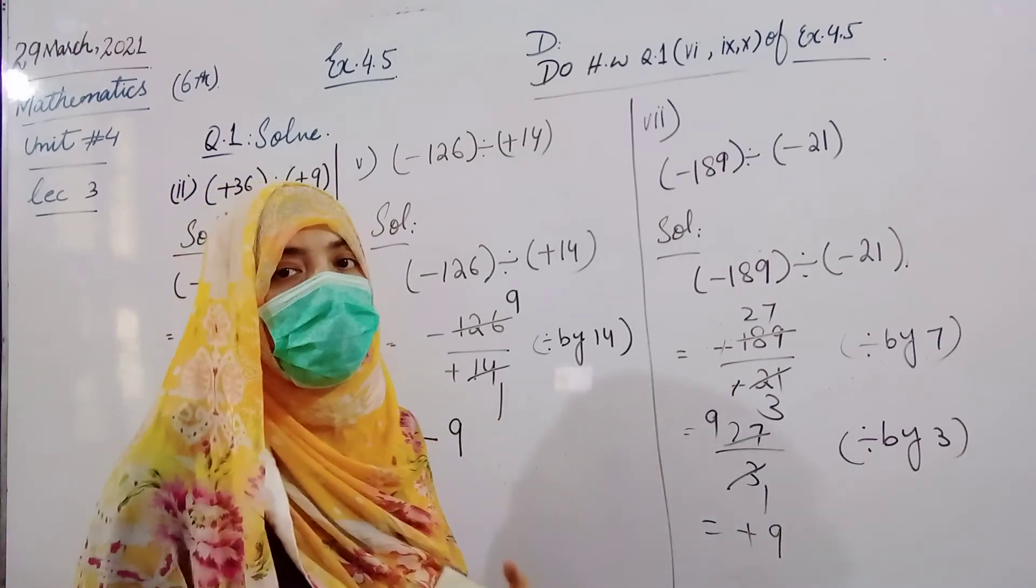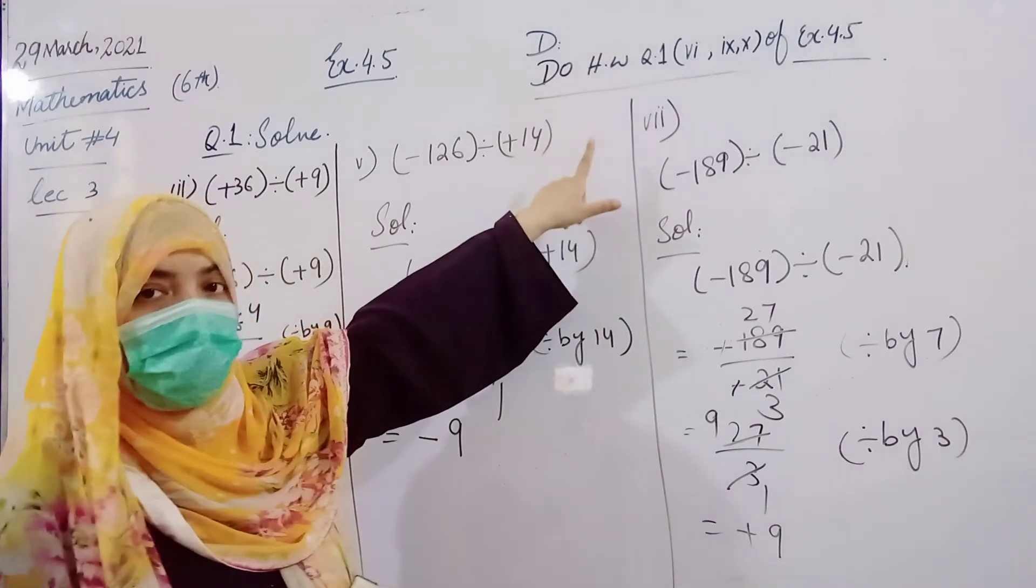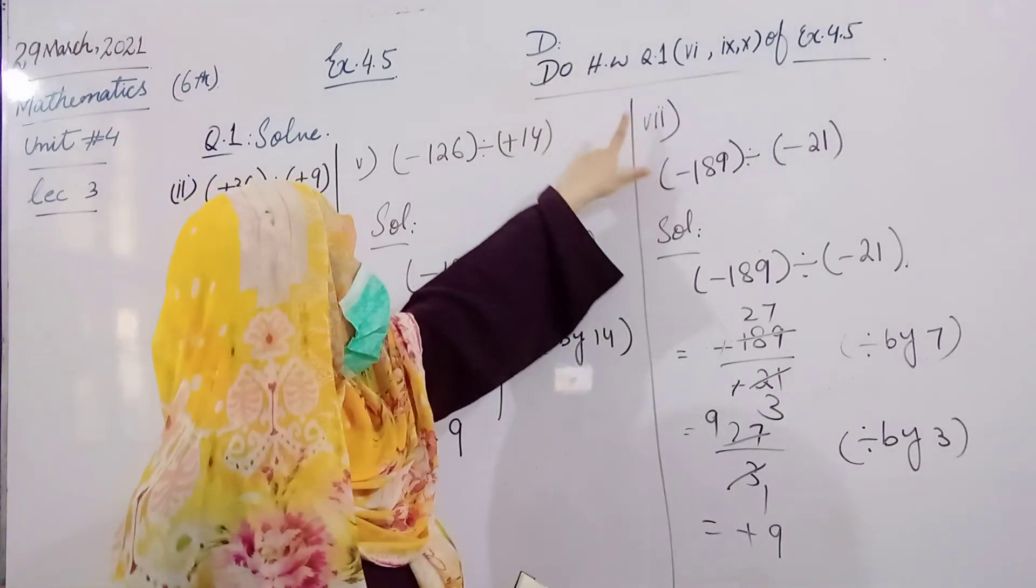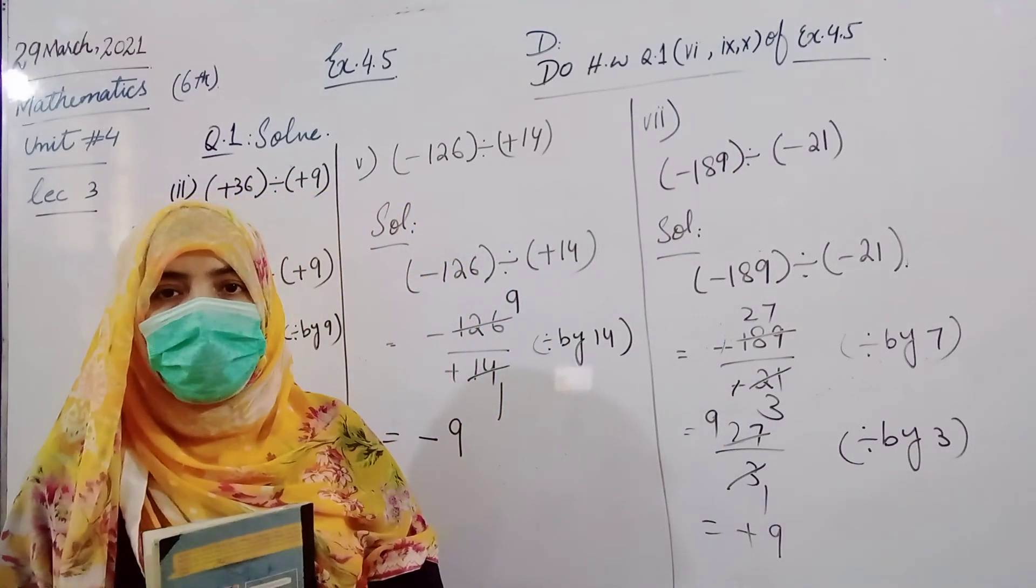You will understand properly. Practice it, practice again and again. Then you will understand. Another thing, we have to keep in mind the signs. In integers, the basic thing is the sign. Your homework is question number 4.5 exercise, questions 5, 6, 9, and 10.